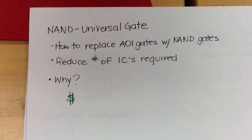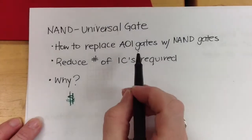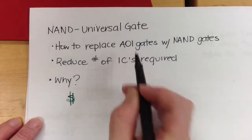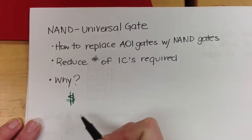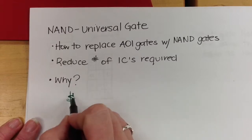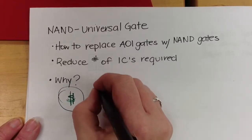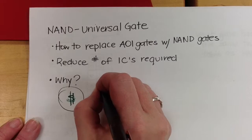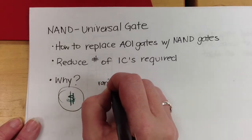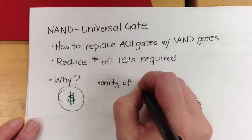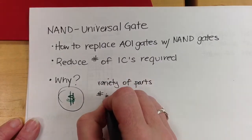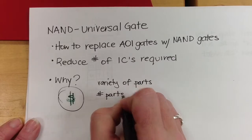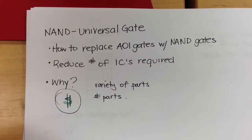We're going to talk about NAND, using it as a universal gate, and how we can replace AND, OR, and NOT gates with NAND gates. This reduces the number of ICs required, and the real reason we do that is because it saves money. It reduces the variety of parts and can reduce the number of parts, because you might need fewer ICs total.